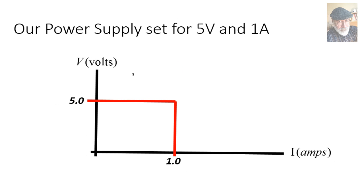Finally, here is the plot corresponding to our power supply adjusted for 5V and 1A. The voltage is 5V as long as the current does not exceed 1A. Or the current will be 1A as long as the voltage does not exceed 5V.